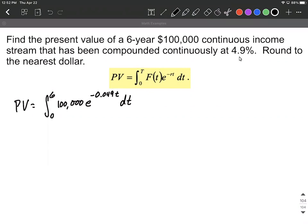Next up, what I would probably do first is go ahead and move that constant, the 100,000, out front. So we still have e raised to the power on the inside here, but at least it looks a little bit cleaner. We can always move constants out in front.